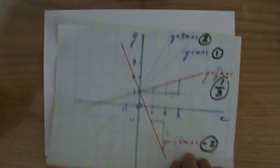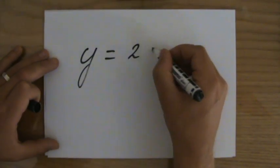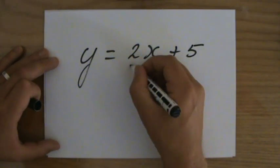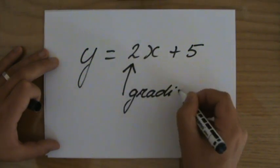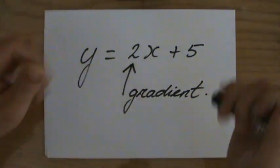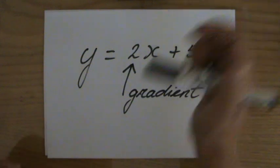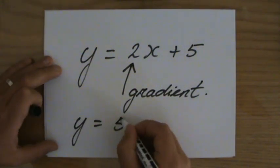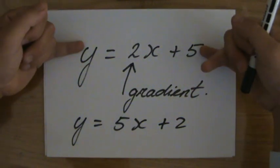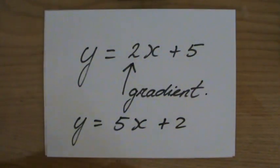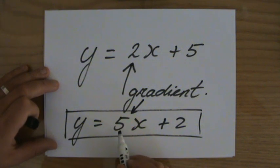In general, if you have an equation like y equals 2x plus 5, that number in front of your x — 2 in this case — is the gradient. So just looking at the equation, I know that going one step to the right means going two steps up. If I compare this with y equals 5x plus 2, which line is steeper? The line y equals 5x plus 2 is steeper because its gradient is 5, which is more than 2.